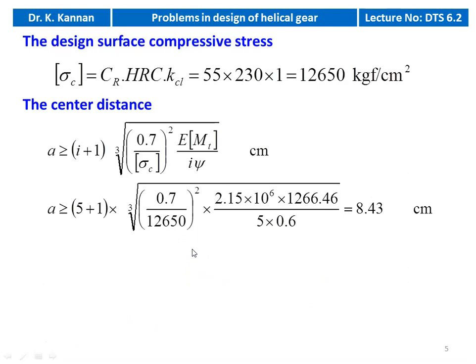We calculate the center distance using the formula: A ≥ (i+1) × ∛[0.7/σC² × E × Mt / (i × ψ)]. Substituting numeric values: A ≥ (5+1) × ∛[0.7/12650² × 2.15×10⁶ × 1266.46 / (5 × 0.6)]. The center distance A ≥ 8.43 centimeter.